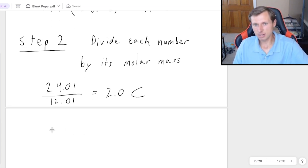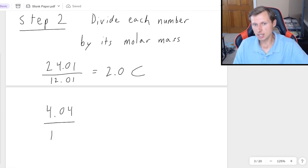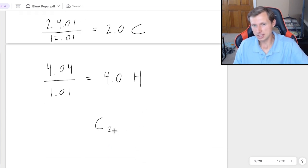And then I do the same thing for hydrogen. So that's 4.04 divided by hydrogen's atomic mass, 1.01. And that's going to be four exactly. So in other words, my answer for this compound is C2H4.